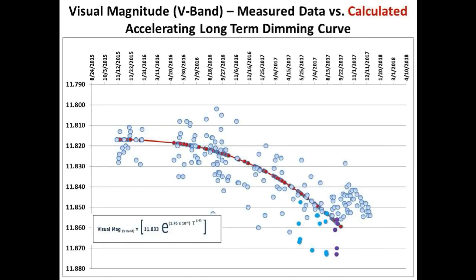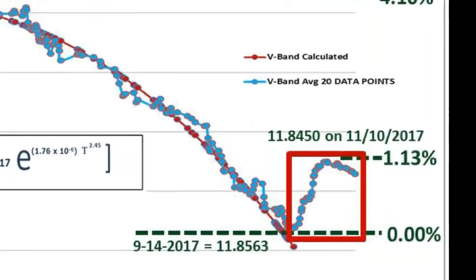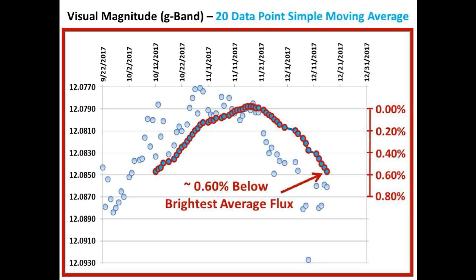Let's now take a look at the long-term light curve of Tabby Star and focus in on the last 94 days, which incorporates both the brightening event as well as the almost fully recovered dimming event. This is the status of the long-term light curve we showed on December 16th, and we are using the 20 data point simple moving average of the G-band measurements to track the long-term flux trend of Tabby Star. The light blue circles are Bruce Gary's G-band measurements, and the connected darker circles, which are blue with red borders, form the 20 data point simple moving average curve. As you can see, we were approximately 0.6% below the highest flux levels reached by the 20 data point simple moving average.